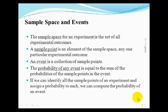The probability of any event is equal to the sum of the probabilities of the sample points contained in the event itself. Therefore, if we can identify all sample points contained in an event, we can simply sum the probabilities of each of those sample points in the event in order to obtain the probability of that event occurring.